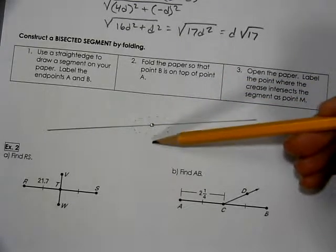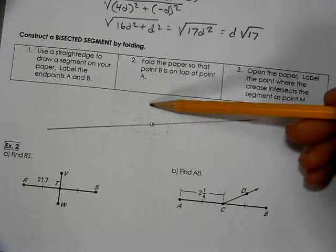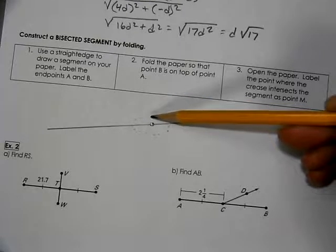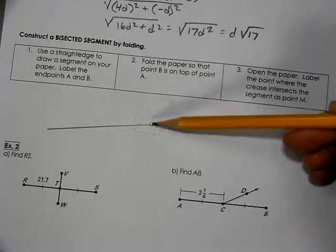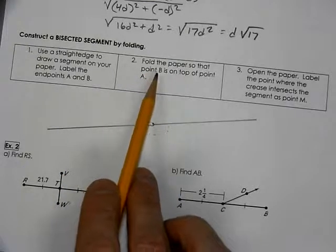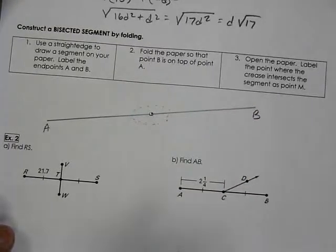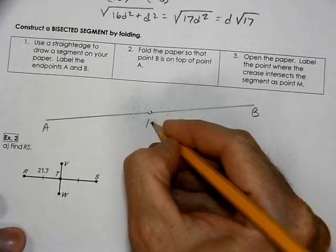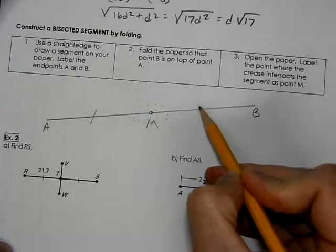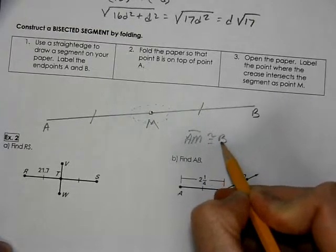You fold it carefully, and you can find right where that midpoint would be located. What you actually did is crease the paper so you have a segment bisector going up and down. If you did it correctly, that segment bisector should actually be a right angle to this segment. Point A touches point B, and you're going to find this new location called point M. It's the midpoint, so AM is congruent to BM.